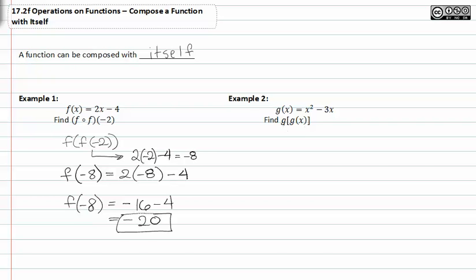In example two, we have g of x as x squared minus three x, and we need to find g of g of x. Since we're not evaluating at a given value for x, we're just going to rewrite x squared minus three x in for the inside g of x. With color coding, we're putting x squared minus three x in for g of x, which gives us g of x squared minus three x.